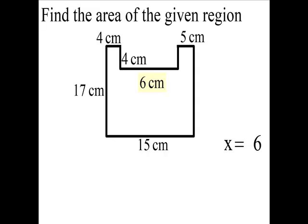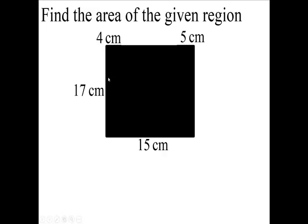Now the area of the region. First of all, the region is a rectangle. The length is 15. The width or the height of it is 17. And when we multiply those, you find out how many squares fit in the rectangle.